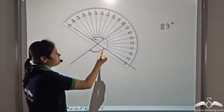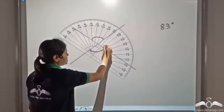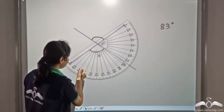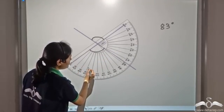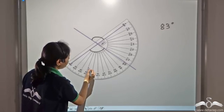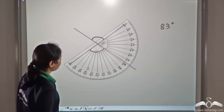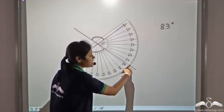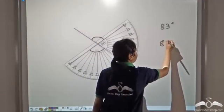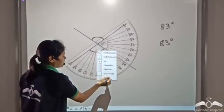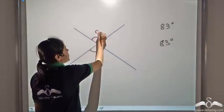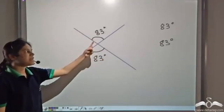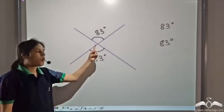Let's check for the other angle. Once again, we place the centre of the protractor on the vertex and make the zero coincide with one of the arms. We see the measure of this angle is eighty-three degrees. So this angle is eighty-three degrees and even this angle is eighty-three degrees. Both these angles are equal, so vertically opposite angles are equal. I had drawn these lines randomly, so you draw any two lines and measure the vertically opposite angles — they will always be equal.